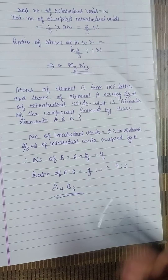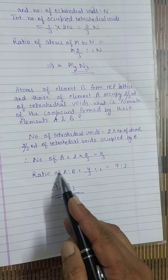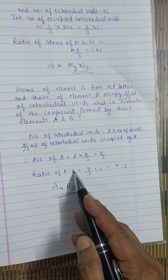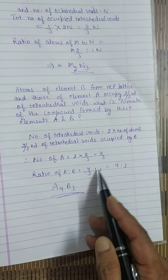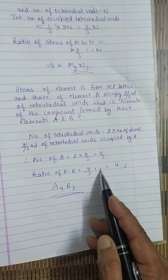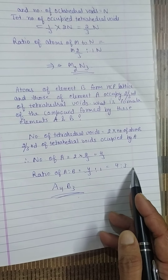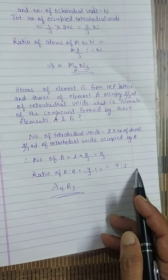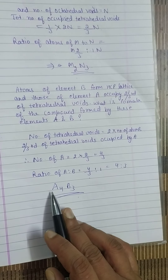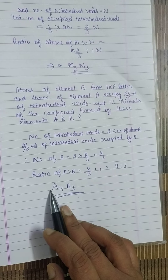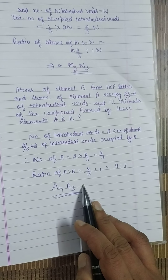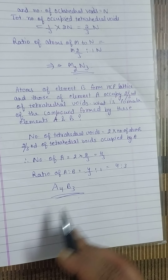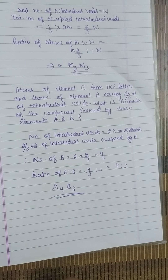The ratio of A to B equals 4/3 to 1, which is equivalent to 4 to 3. So the formula formed is A₄B₃. This is the formula for this compound.